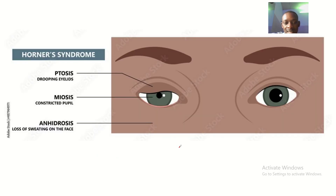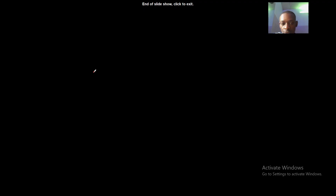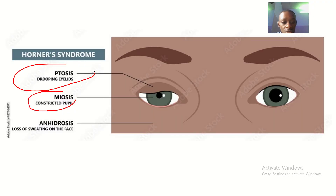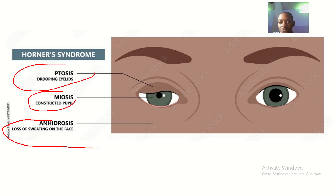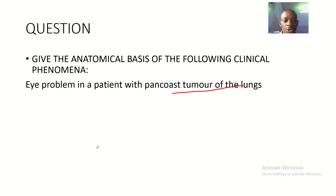Third, there is enophthalmos — a sunken eyeball — due to paralysis of the orbitalis muscle. As extra knowledge, anhidrosis, which is loss of sweating on one side of the face, can also occur because of the sweat glands being affected.